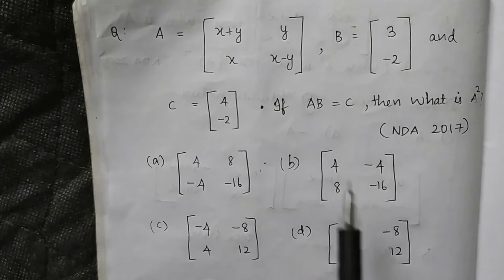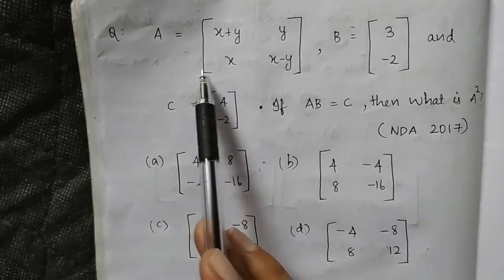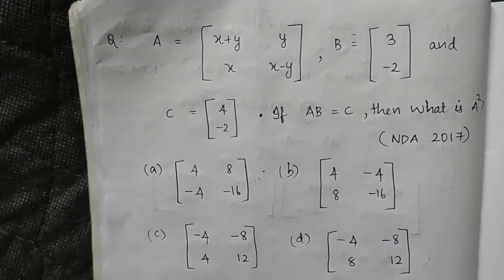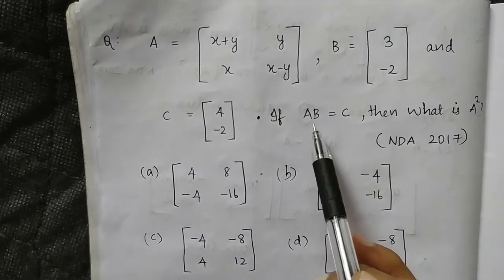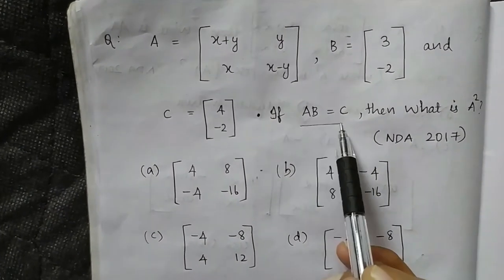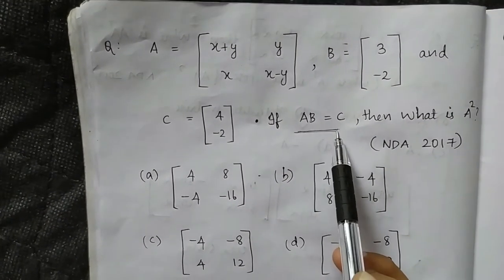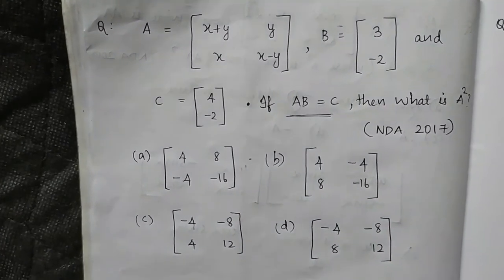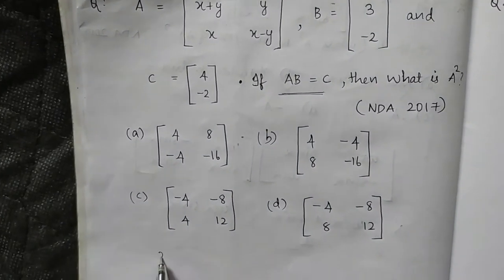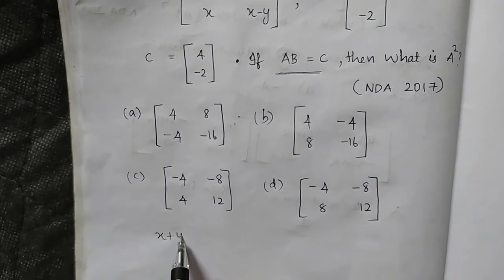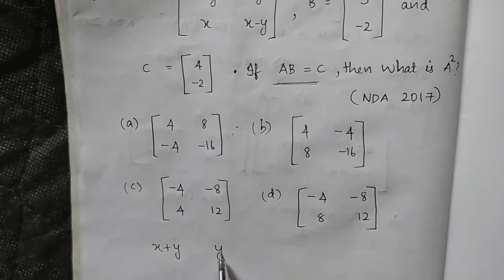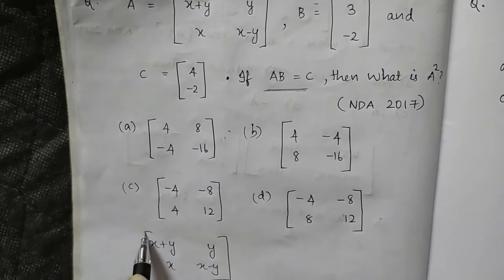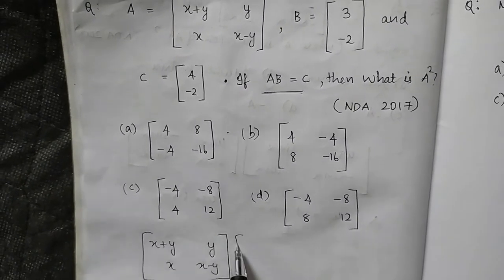Then the second question comes. A, B, C — there are three matrices and there is a condition: if AB is equal to C. Then we will be able to solve for the condition.